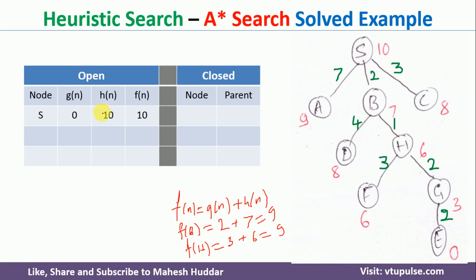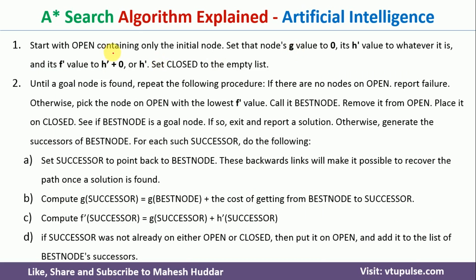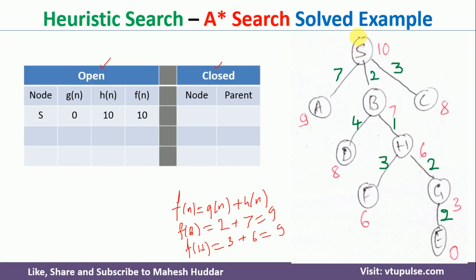Now, this algorithm uses two lists: one called open and another called closed. Initially, closed is set to nothing and open contains only the initial node S. Open contains only the initial node, and its g value is set to 0 because the cost to go from S to S is 0.